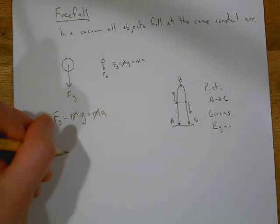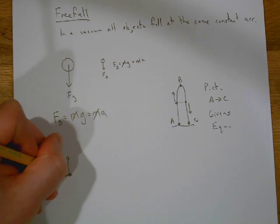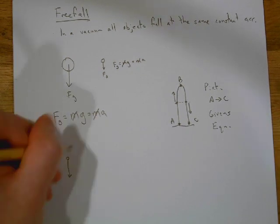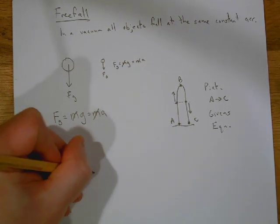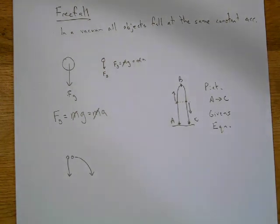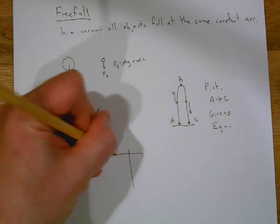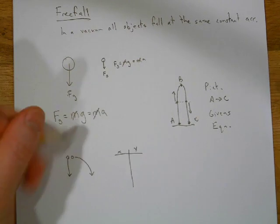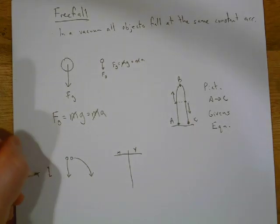The same process every time: draw your picture, figure out your givens, write your equation, and solve. We had problems involving projectiles, which combined horizontal and vertical motion. For example, if I drop something versus launching something horizontally, they will both hit the ground at the same time — because vertically, they are exactly the same.